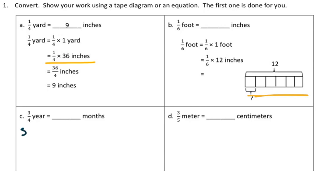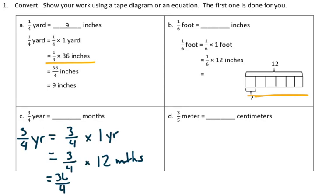3 fourths of a year is equal to 3 fourths times 1 year, and hopefully the students know 3 fourths times that 1 year is the same as 12 months. When they do this, 3 fourths times 12 months, they get 36 fourths of a month, and 36 fourths is equal to 9 months. So, 3 fourths of a year is equal to 9 months.